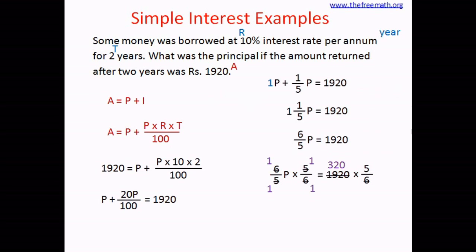On the right-hand side, 1,920 divided by 6 equals 320. So P equals 320 multiplied by 5. Since 5 times 300 equals 1,500 and 5 times 20 equals 100, we get 1,600. That means the principal is 1,600 rupees.